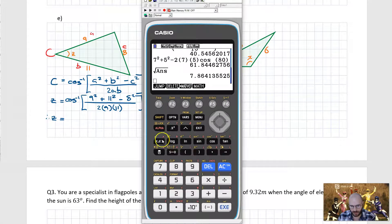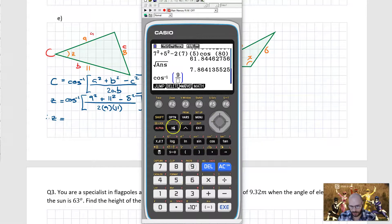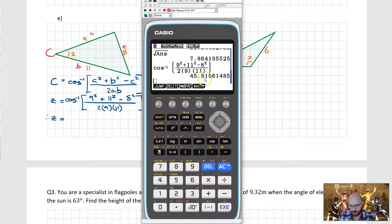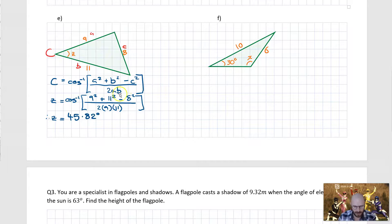Going straight for the calculator now, we're going to go shift cos, then inside the brackets we're going to go for a fraction. So it will be 9 squared plus 11 squared minus 8 squared. Downstairs we have 2 times 9 times 11. This will come out to be 45.8156 or 45.82. And therefore we get the answer to this particular problem here. So Z in our case is 45.82.